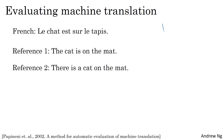What the BLEU score does is, given a machine-generated translation, it allows you to automatically compute a score that measures how good that machine translation is. The intuition is that so long as the machine-generated translation is pretty close to any of the references provided by humans, then it will get a high BLEU score.